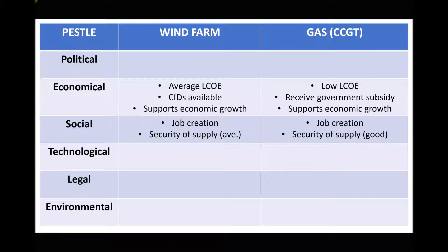Considering social factors, both projects would create jobs and be seen favourably by surrounding areas, and both would help secure the supply of electricity. The wind farm's social impact is rated average, while the gas plant's is rated good, because wind energy is less predictable. With gas, when demand goes up we burn more gas and produce more electricity, and when demand goes down we reduce gas consumption. So the gas plant is likely to improve security of supply more than the wind farm.